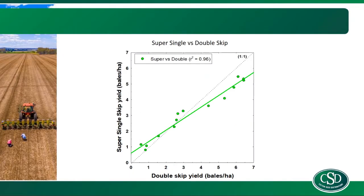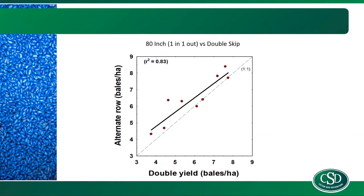Super single versus double skip — a pretty similar result. In scenarios where you're getting less than about 2.5 bales per hectare, you're better off with a super single skip configuration. Getting up in those high yields of 2.5 and above, you're better off with a double skip configuration. Comparing 80-inch or one-in-one-out to double skip, it's showing that if you can accommodate an 80-inch configuration in your dryland, you are going to do just as well as double skip, if not a little bit better — possibly because of more uniformity across the crop.